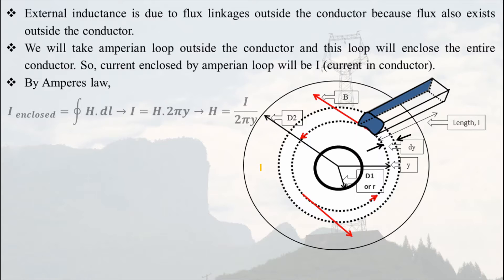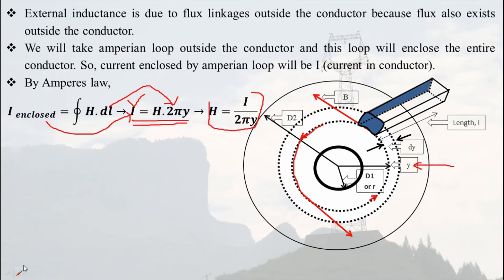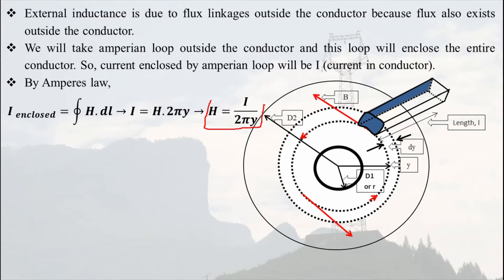The total current enclosed by this Amperian loop is i. By Ampere's law, i enclosed equals the line integral of H·dl. Here i enclosed equals i, and the line integral of dl equals simply the circumference of the Amperian loop, which is 2πy. So we get i = H · 2πy, and therefore H = i / (2πy).